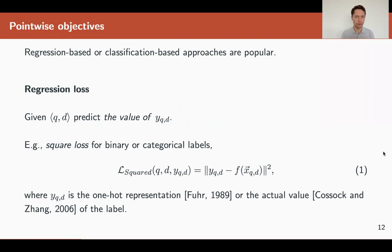For example, if we talk about regression loss, we have a query-document pair as a vector, we have the value which is the relevance label, and we would like to optimize the regression loss. For example, the squared difference between the real scores and the predicted scores.